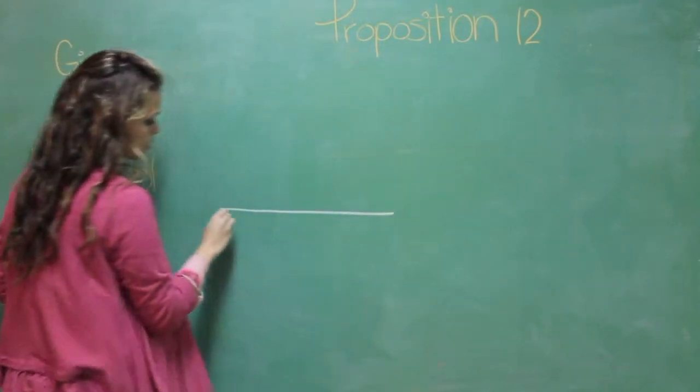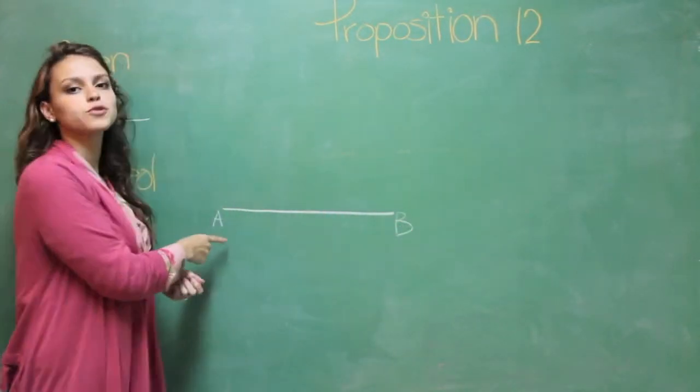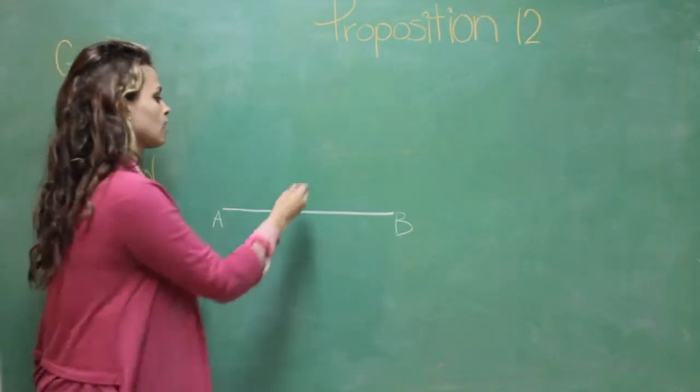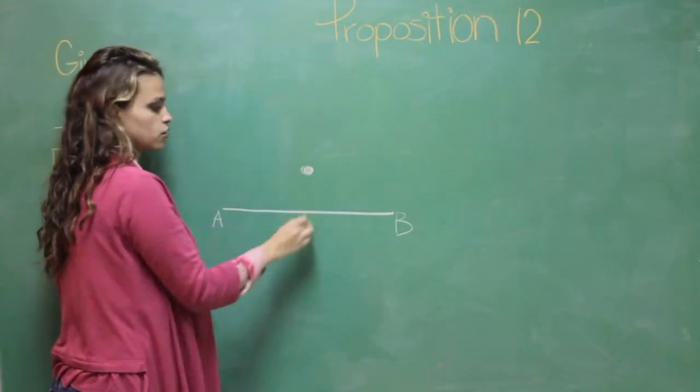So, let A and B be our infinite straight line, and C the point that is not on the line.